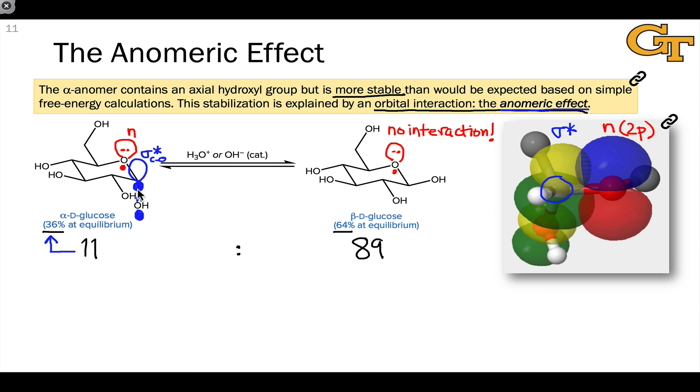This can show up in other contexts where a lone pair is appropriately aligned to overlap with a sigma star orbital for a polarized bond, like C-O, C-F, or C-Br. Any carbon-electronegative heteroatom bond has the potential to be involved in an anomeric effect.